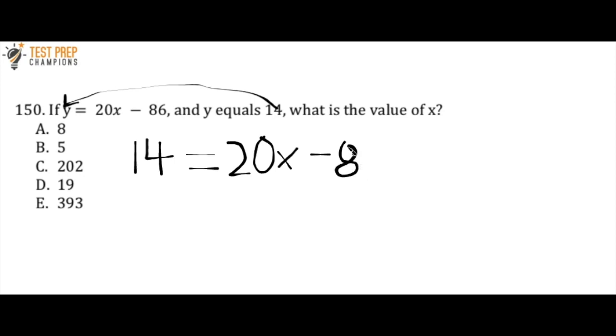And now what I want to do is I want to get x by itself. So whenever you get a question that says what is the value of x or solve for x, anything like that, all that really means is that you want to get the x by itself on one side of the equation. So since I have 20x minus 86, I'm going to start by adding 86 to both sides of the equation.